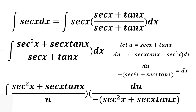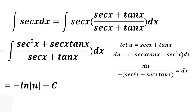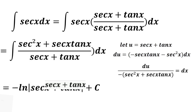Substituting u for secant x plus tangent x and du over (negative secant squared x plus secant x tangent x) for dx, cancel secant squared x plus secant x tangent x, giving the negative integral of 1 over u du. This equals negative ln of the absolute value of u plus c. Substituting back, the integral of secant x dx is equal to negative ln of the absolute value of secant x plus tangent x plus c.